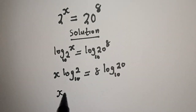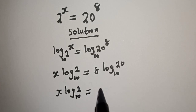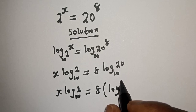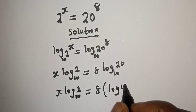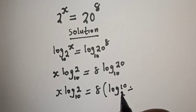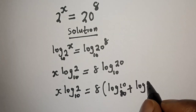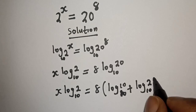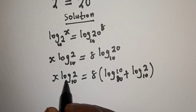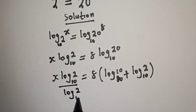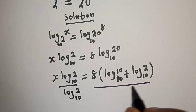So s times log 2 base 10 is equal to 8 times bracket log 20 base 10. Log 20 base 10 can be written as log 10 base 10 plus log 2 base 10. Now let's divide both sides by log 2.